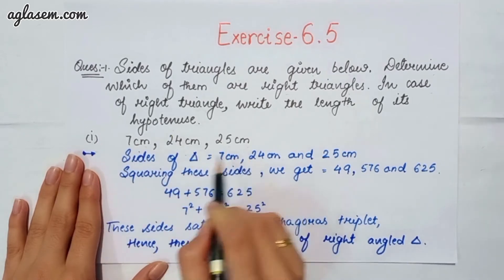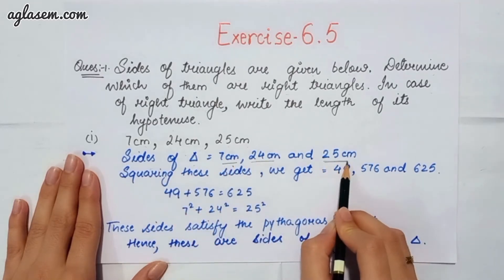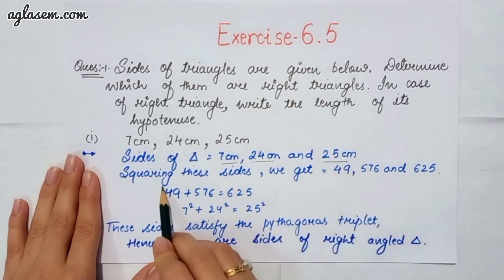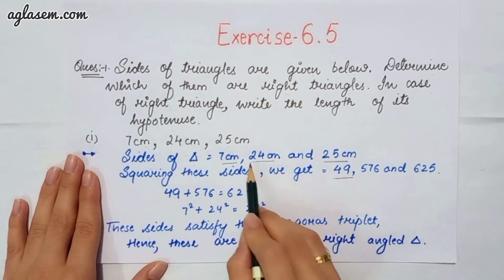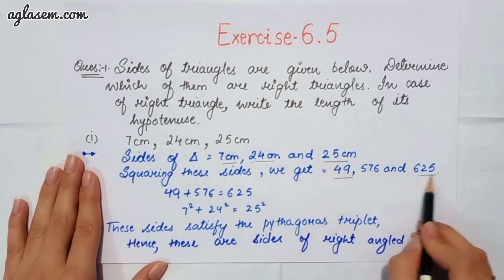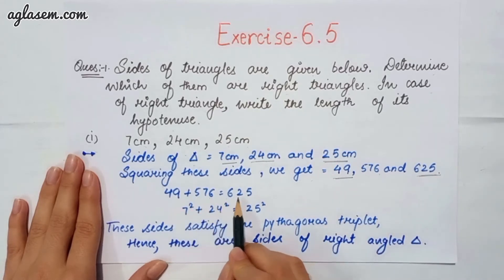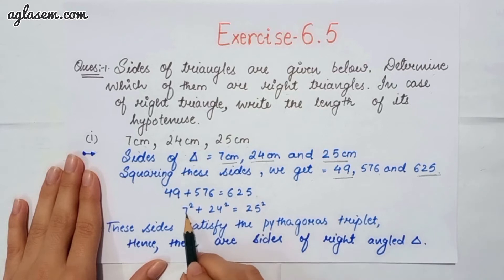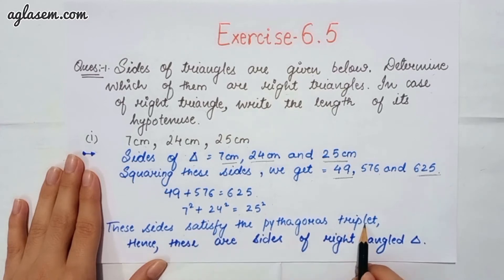The sides of the triangle are 7 cm, 24 cm and 25 cm. Squaring these sides we get: 7² = 49, 24² = 576, 25² = 625. So, 49 plus 576 equals 625, meaning 7² + 24² = 25². These sides satisfy the Pythagorean triplet. Hence, these are the sides of a right angle triangle.